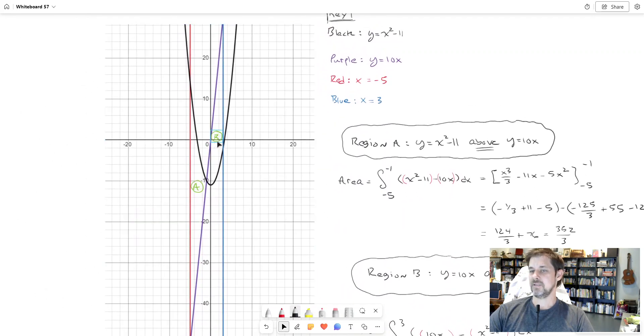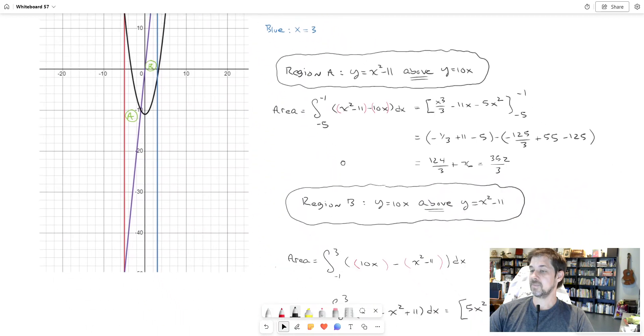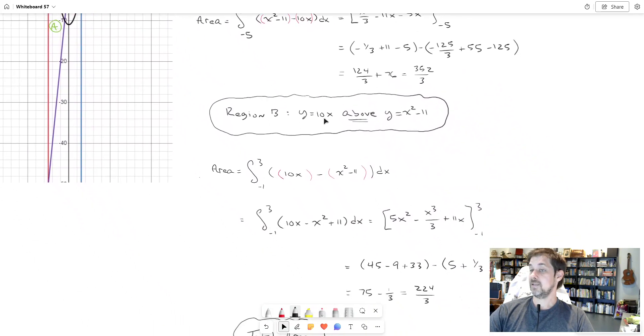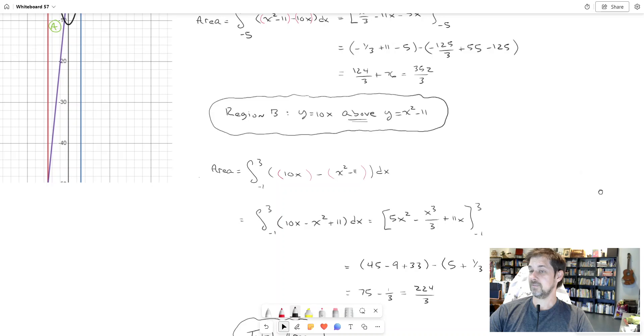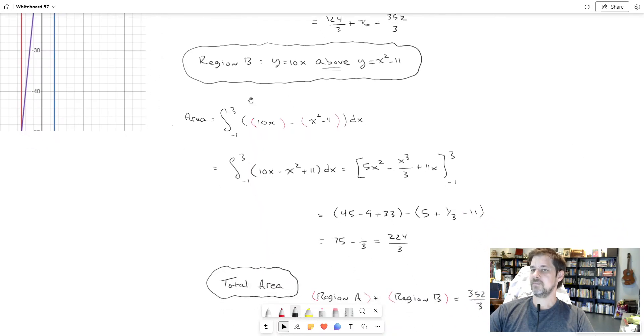Now the rest of it would be region B. Region B is characterized this way: the purple line is above the parabola which you see in black. In other words, y equals 10x is above y equals x squared minus 11. Remember how we set it up - we write our integral, we put the equation for whatever's above minus the equation for whatever's below. I was careful to use parentheses here because that minus, that subtraction, would apply to this entire thing. So that negative distributes all the way across.